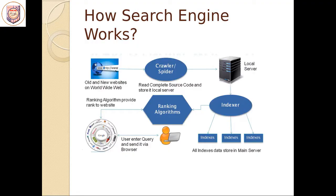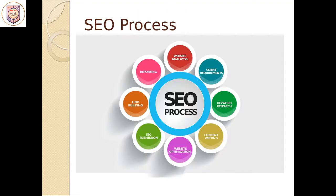Now we will see how the SEO process works. The search engine optimization process is comprised of very different processes: website analysis, client requirements, keyword research, content writing, website optimization, SEO submission, link building, and reporting. Including all these things completes one SEO process. These are the basic ones — we can add others as per our website requirement.